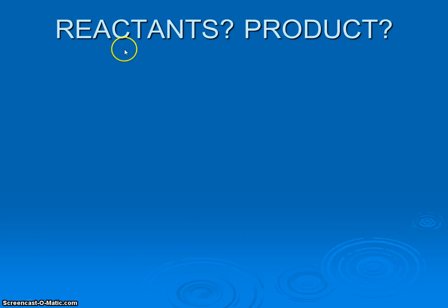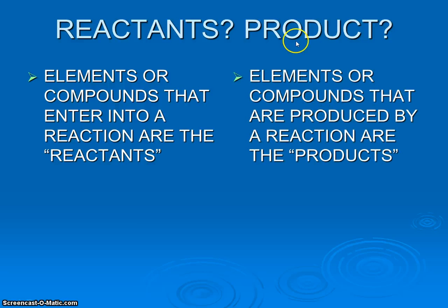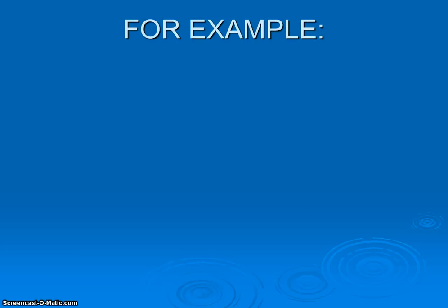What do we mean by reactants and products? Very simply put, reactants are what you are starting off with in the beginning — they are what enter into a reaction. On the opposite end are products, just as the name implies: that's what gets produced, what gets made. Let's look at a couple of simplified chemical reactions that may or may not occur in cells, and try to identify the reactants and the products.